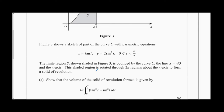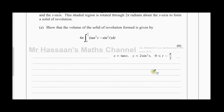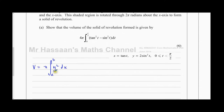We've got to first show that the volume of the solid of revolution is given by a specific equation. When finding the volume of a solid of revolution, we have to define that volume as pi times the integral of y squared with respect to x, between the limits on the x-axis of the area we want to rotate. We need to apply this to the parametric equation we're given.